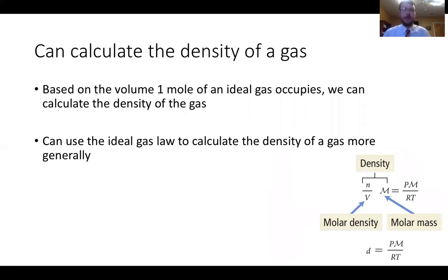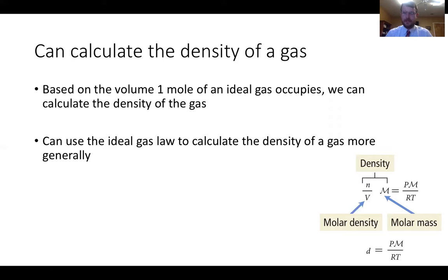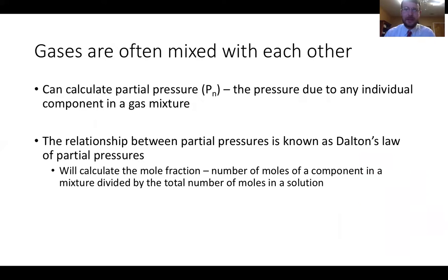We already showed how to derive density from the ideal gas law. Density increases with molar mass — the more molar mass, the higher the density of a gas. We can use these relationships to calculate the molar mass of an unknown gas. If I give you properties of an unknown gas, you can use this to calculate its molar mass.